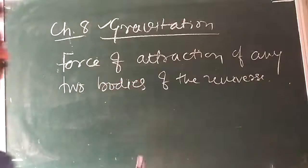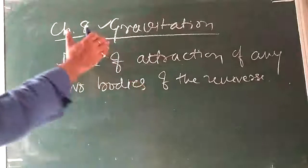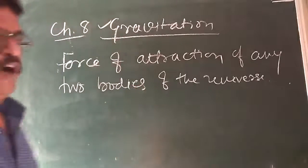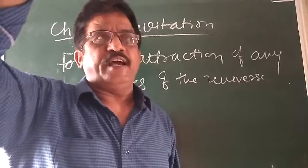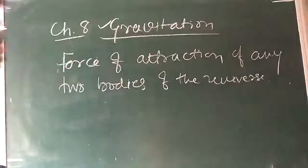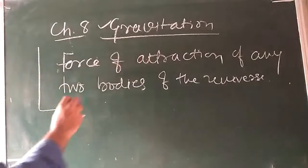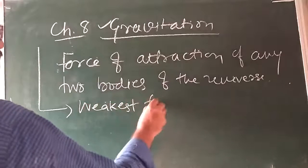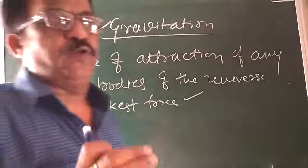This was discovered by Newton. Newton discovered gravitation in the year 1665 when he saw an apple falling down from a tree. Suppose this is the apple in my hand falling down — that was first observed by Newton. The gravitational force is the weakest force among the four fundamental forces of nature.